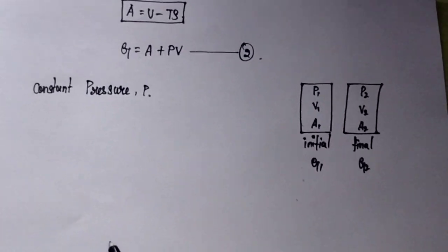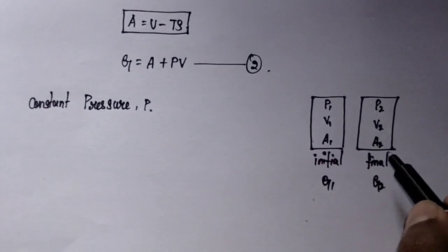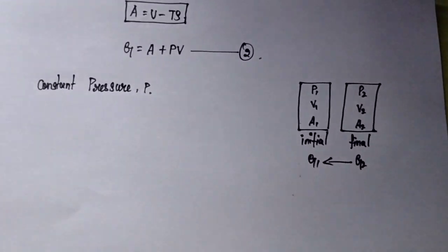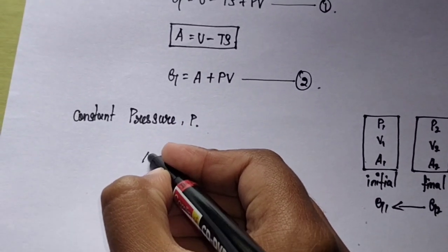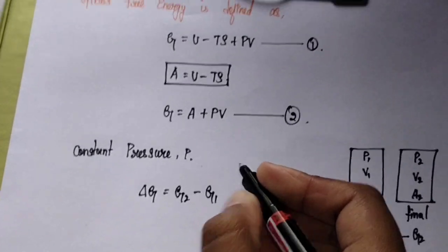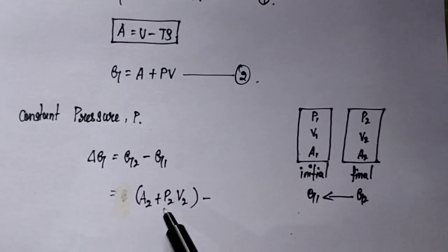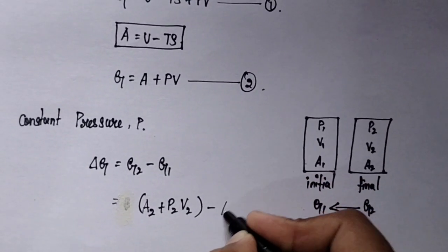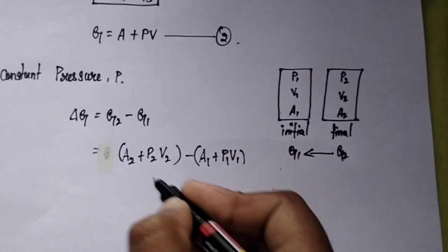At constant pressure P1, consider the change in G when the system passes from the initial state to the final state, that means from G1 to G2. So ΔG equals G2 minus G1. From equation two, G2 equals A2 plus P2 times V2, and G1 equals A1 plus P1 times V1.